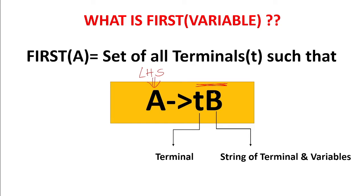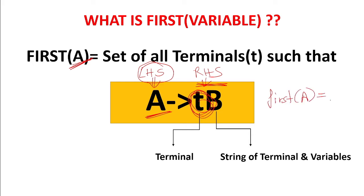On the right-hand side there can be a terminal or a variable — both can be there. So FIRST of A is the first terminal which is coming on the right-hand side. So if T is the first terminal on the right-hand side, then FIRST of A is T. Because T is coming at the first place and it is a terminal. FIRST of any variable is always a terminal; it cannot be a variable itself.